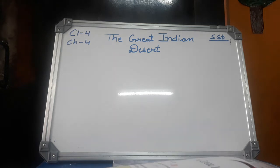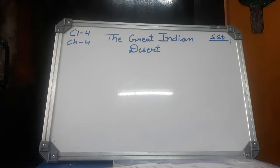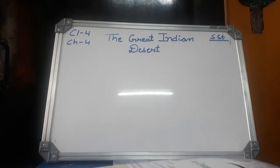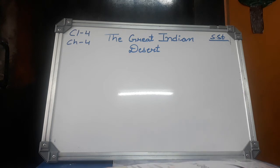You already learned about this in your previous class — the camel is a ship of the desert. That's why camel is mostly found in the desert area. And cactus, a thorny plant, is also mostly found in the desert area.